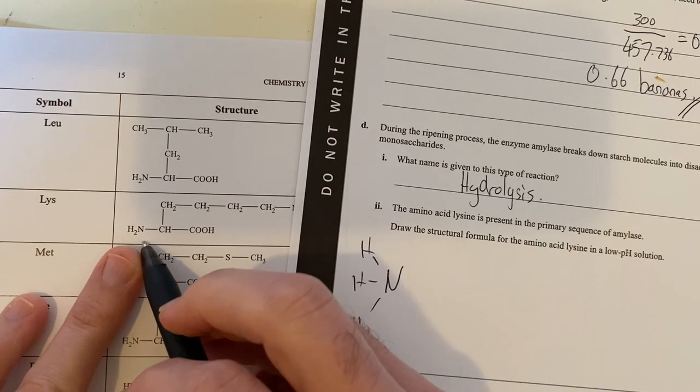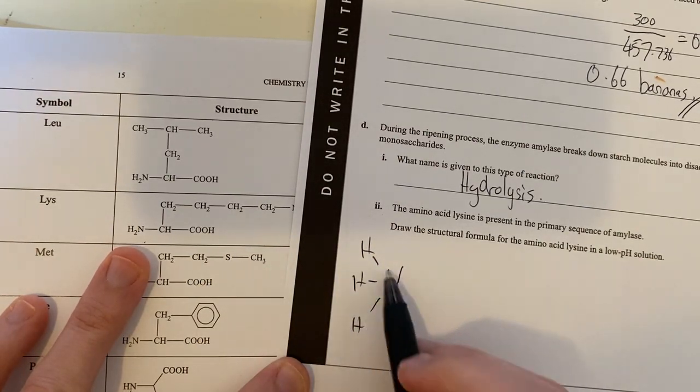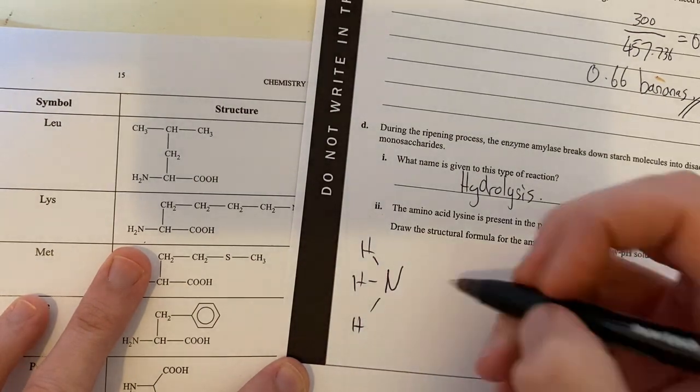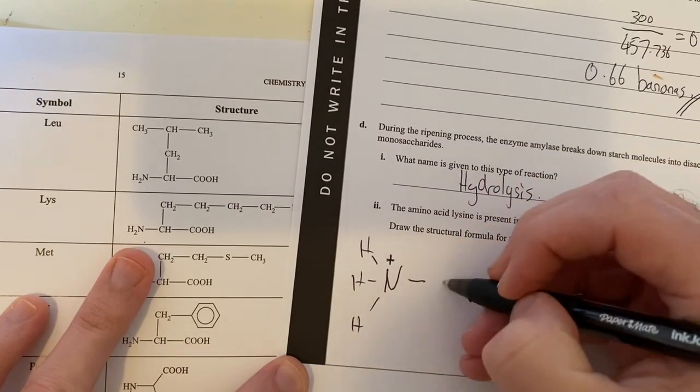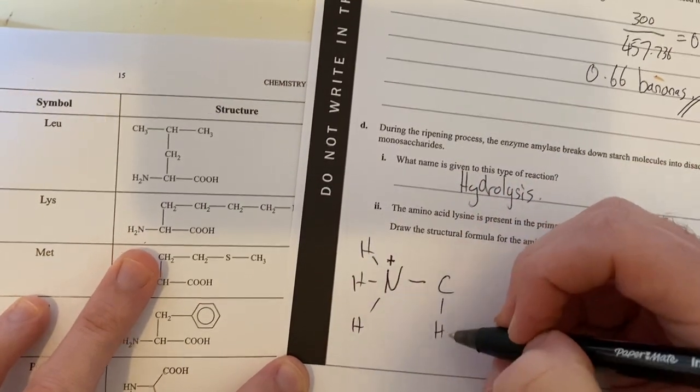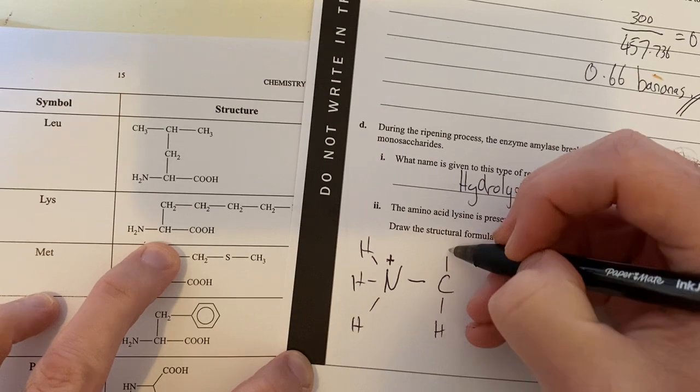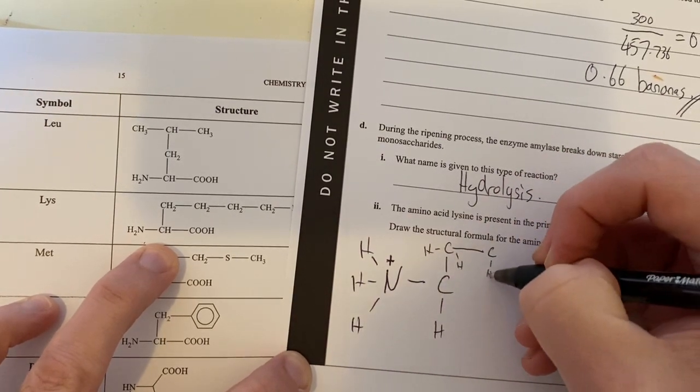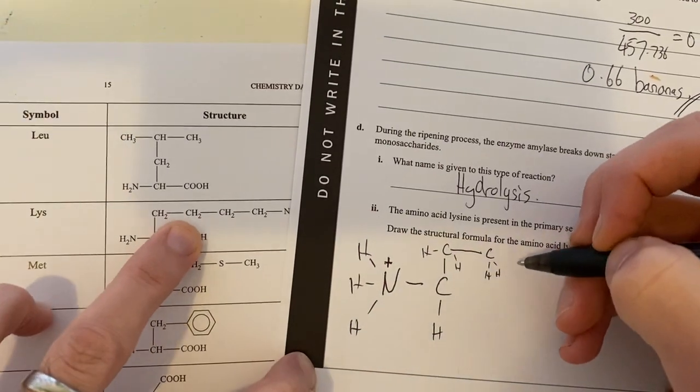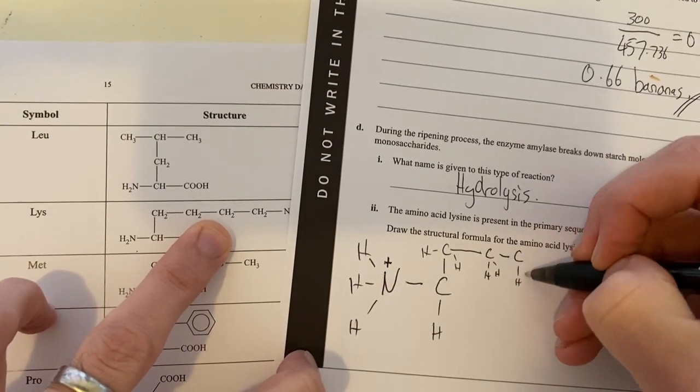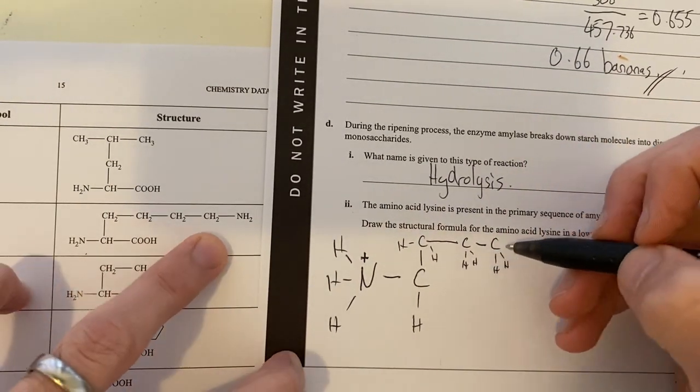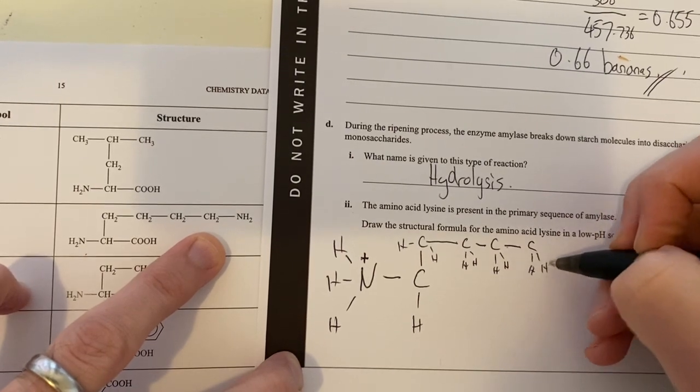We have NH3. Because it's low pH, it's going to be acting as a base and accepting the extra hydrogen that's present. That means it's going to be positive. That's bonded to a carbon, which is bonded to an H, then we have CH2, then CH2, then another CH2. This is a terribly drawn structure, but I'm just rolling with it at this stage.